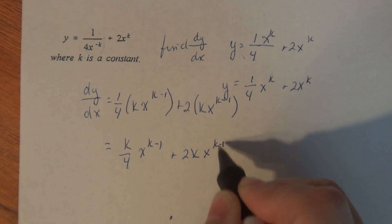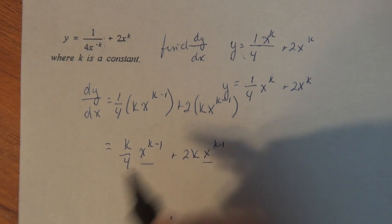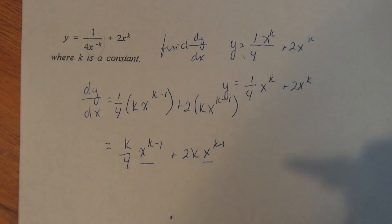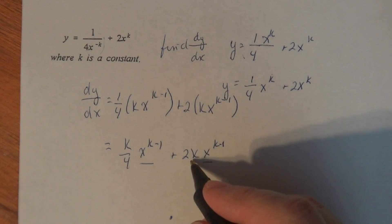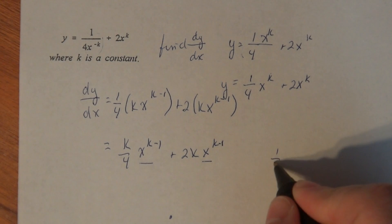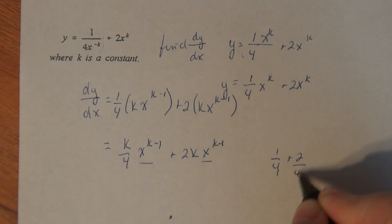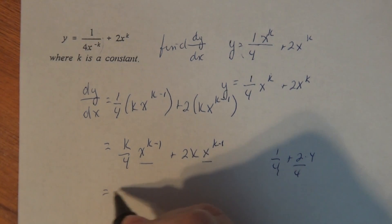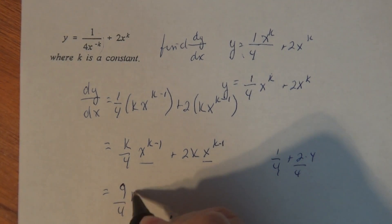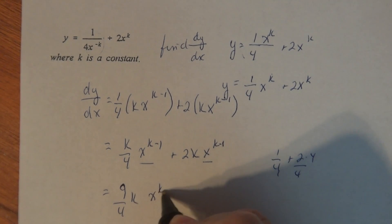Now these are actually like terms because of the x to the k minus 1, so I just need to add one quarter k plus 2k. So one quarter plus 2 gives me nine quarters k times x to the k minus 1.